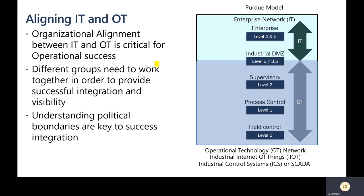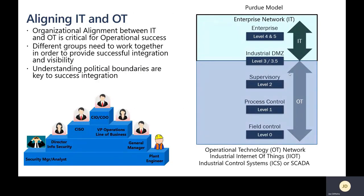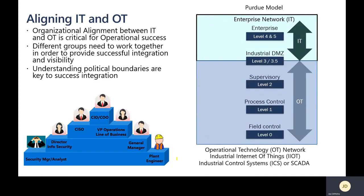One important thing to be aware of is the convergence between IT and OT — it's a big organizational challenge and critical for operational success. Different groups need to work together to provide successful integration and visibility within both networks. Understanding the political boundaries is really key. The security team doesn't align with the manufacturing team until well up in the organizational structure, so it's important to break down these political barriers that may exist within the company.